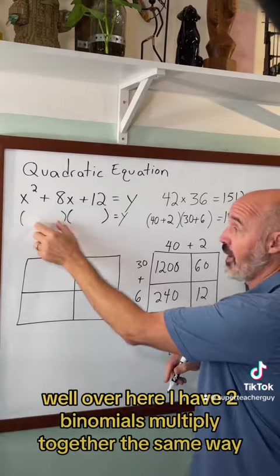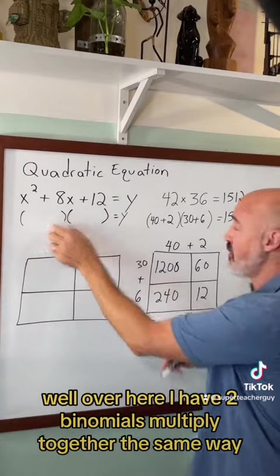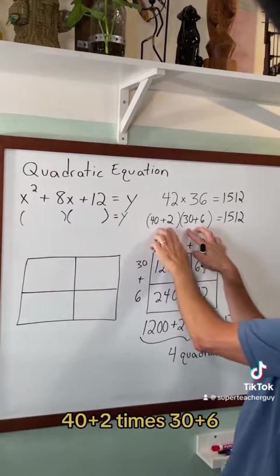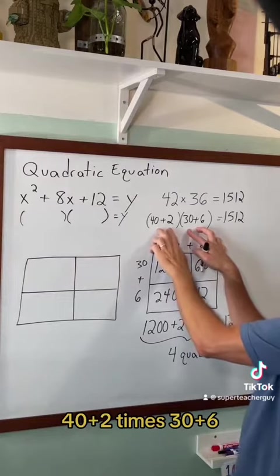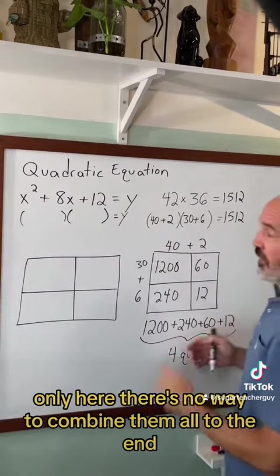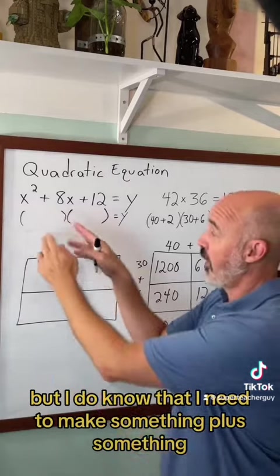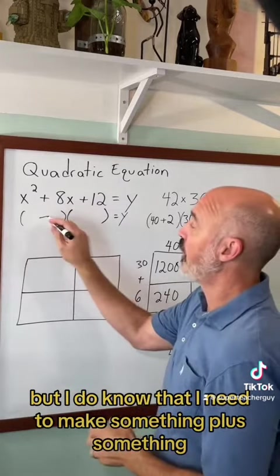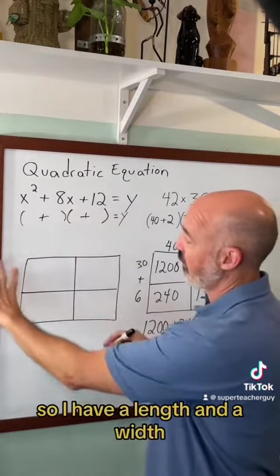Well over here I have two binomials multiplied together the same way I have 40 plus 2 times 30 plus 6. Only here there's no way to combine them all to the end. But I do know that I need to make something plus something so I have a length and a width.